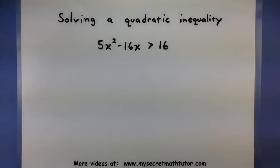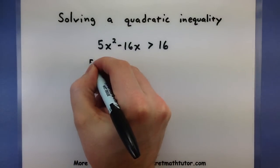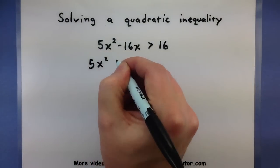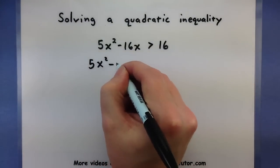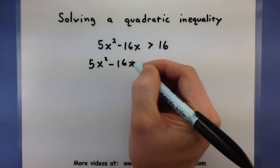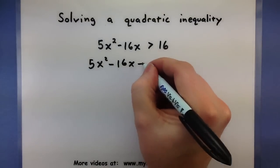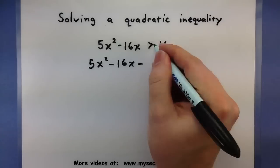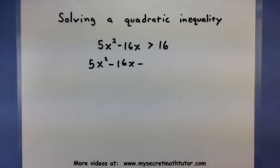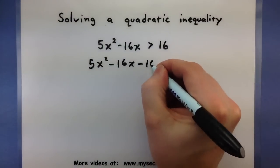The very first thing we want to do is get everything over to one side. This is so that we can have our quadratic in relation to zero. It will really help us determine whether it is positive or negative, rather than trying to hunt down its relation to a number like 16 — that's not quite as easy.